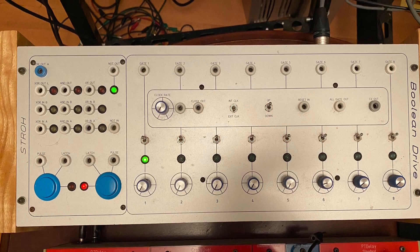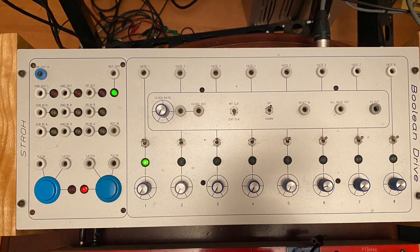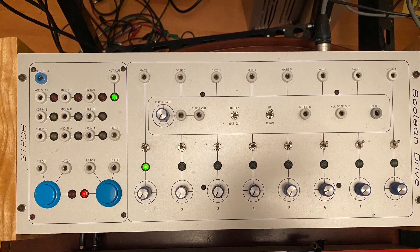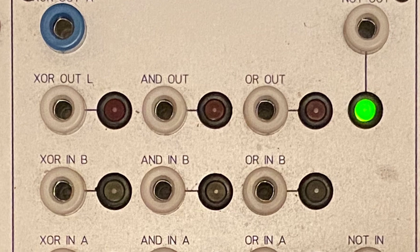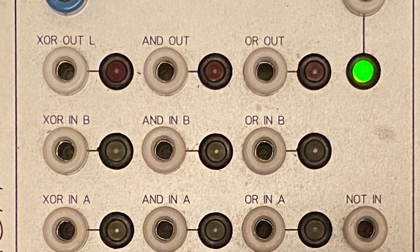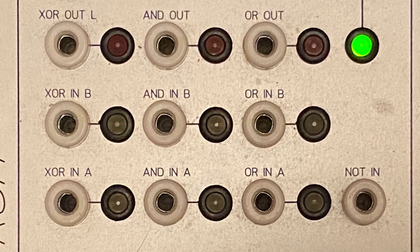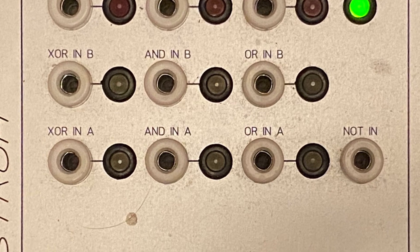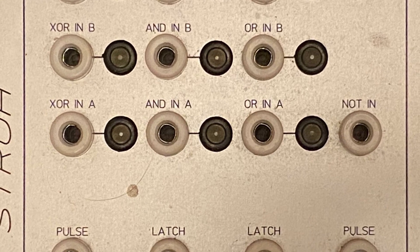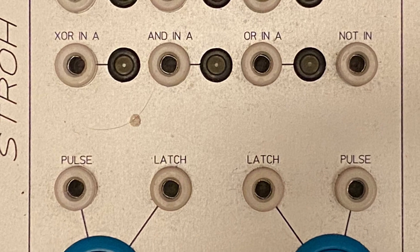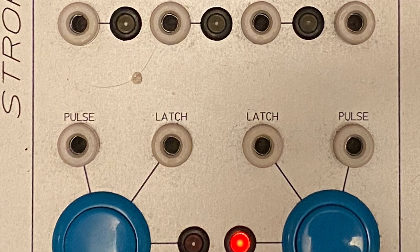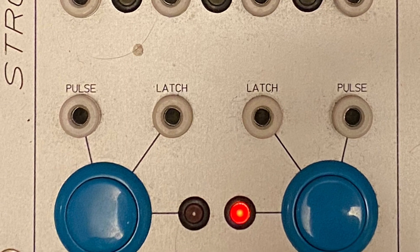The Stroh Boolean drive is a combination Boolean logic module and sequencer. In addition to the familiar XOR, AND, and OR operations, the Boolean side also has two very nice arcade style buttons. These can generate individual pulses or latched voltages which we will exploit in the first patch of this demonstration.